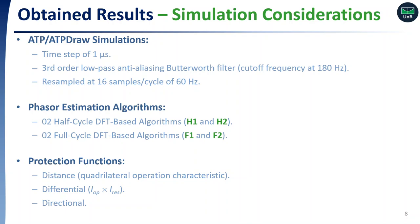In order to do that, ATP/EMTP simulations were carried out using a time step of 1 µs. Then, a third-order low-pass anti-aliasing Butterworth filter with cutoff frequency at 180 Hz was applied, and the signals were resampled considering a sampling rate of 16 samples per cycle. Two half-cycle and two full-cycle DFT-based algorithms were implemented. We assessed transmission line protection performance in the near vicinity of the LCC-HVDC link, considering the distance protection function with quadrilateral operating characteristics, differential protection function, and directional protection function.